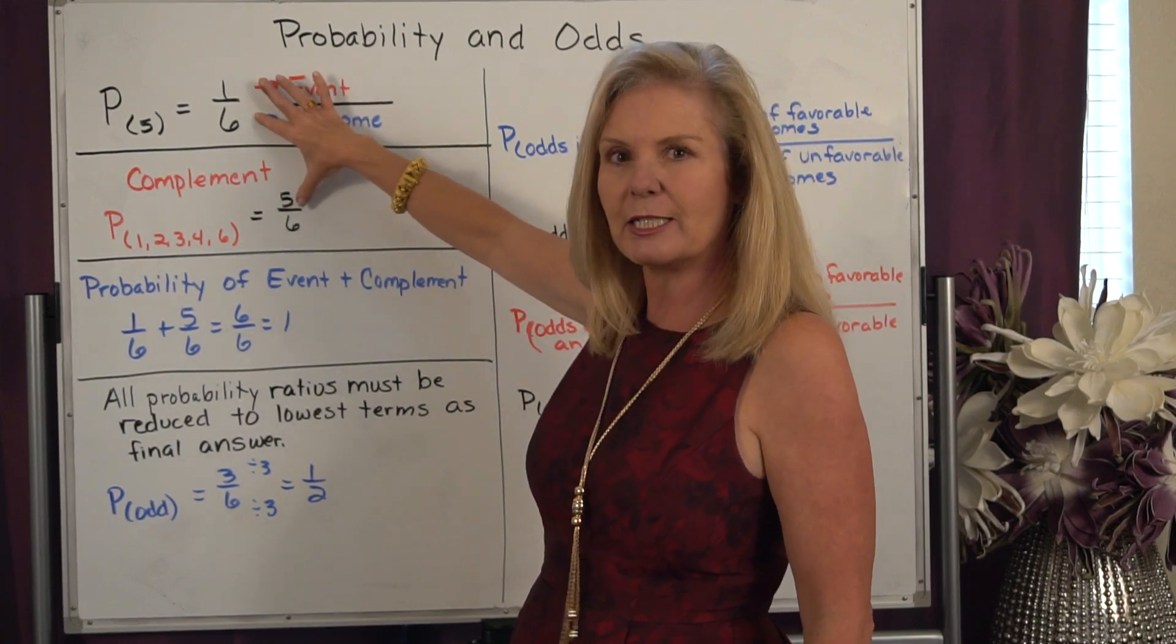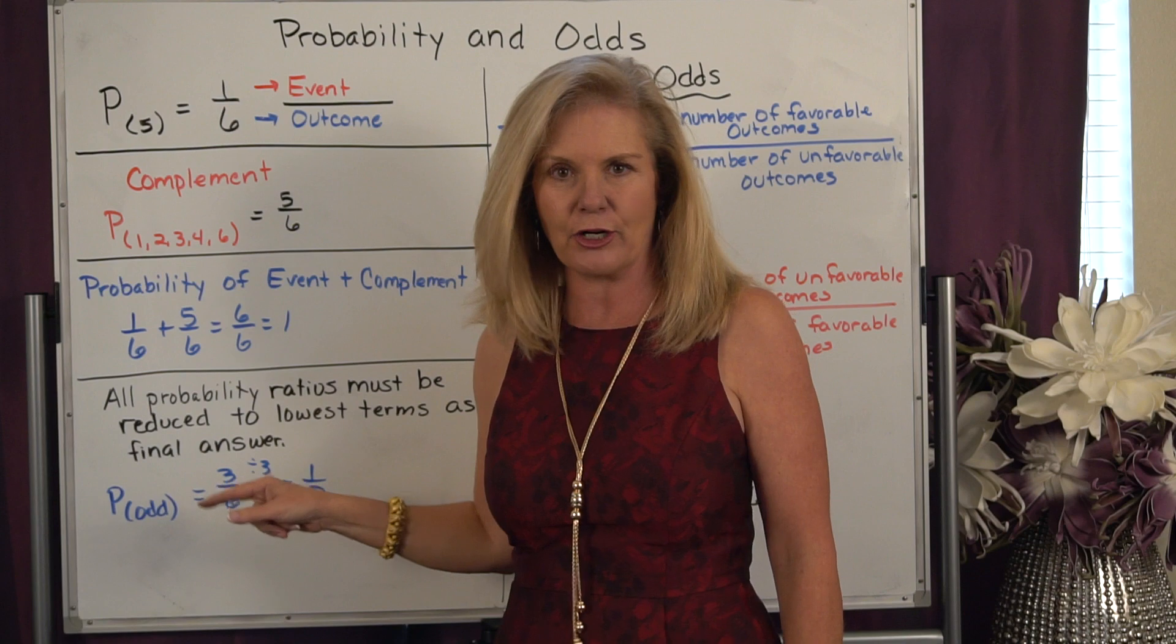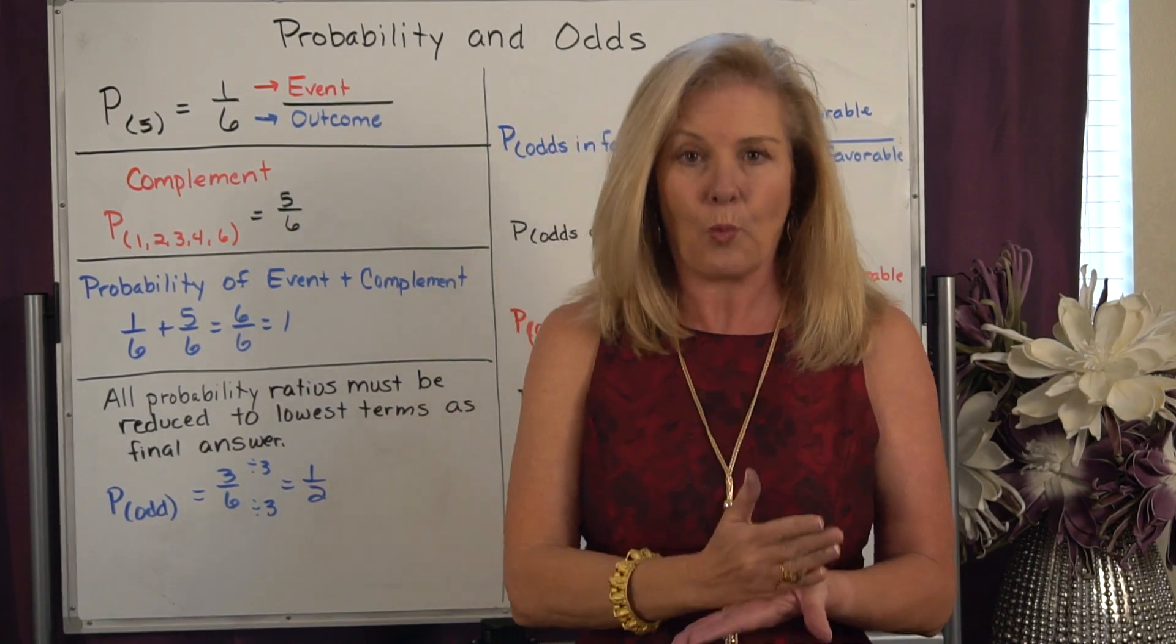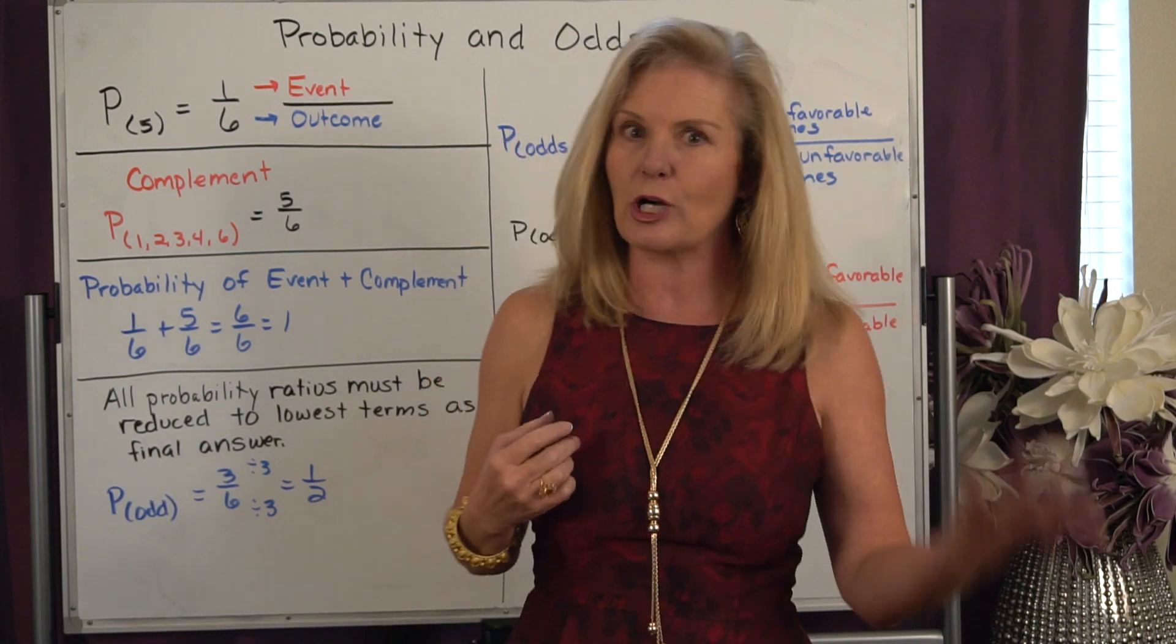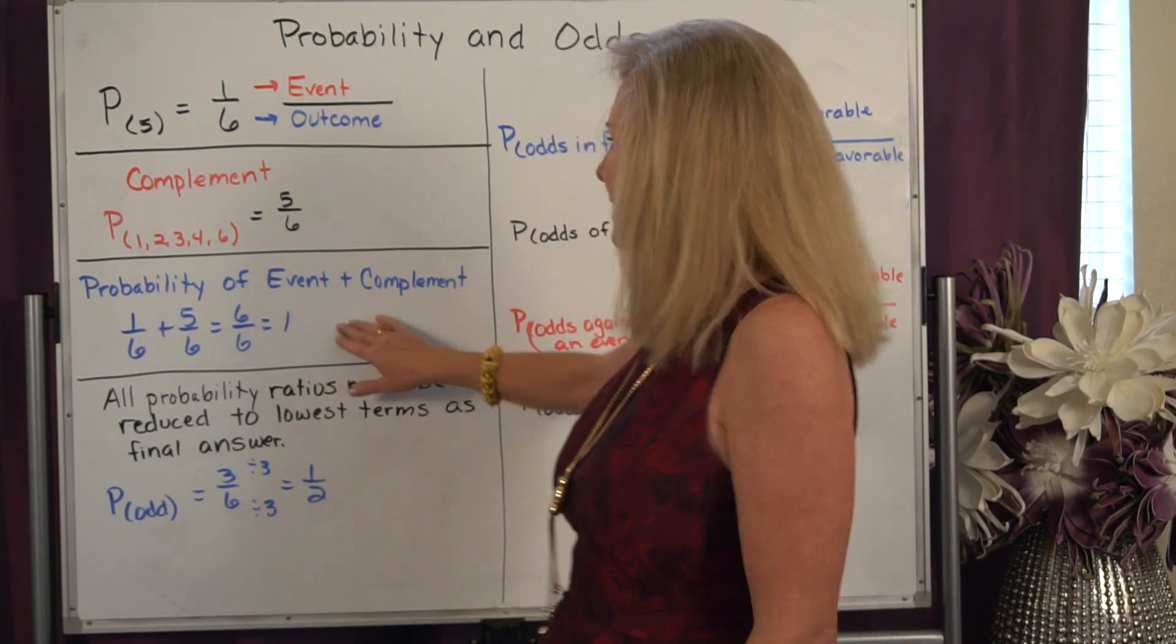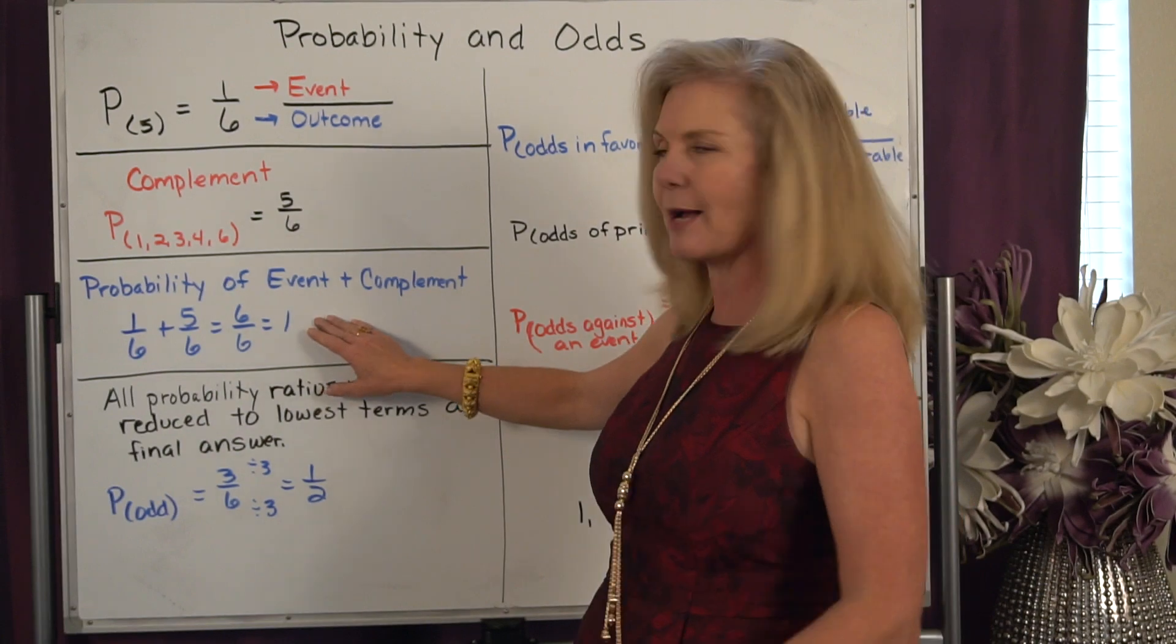If you take the probability ratio and its complement and you add them together, they always equal 1 or 100%. It either happens or it doesn't happen. There's nothing else that we can have. And so every probability ratio and its complement will always equal 1.